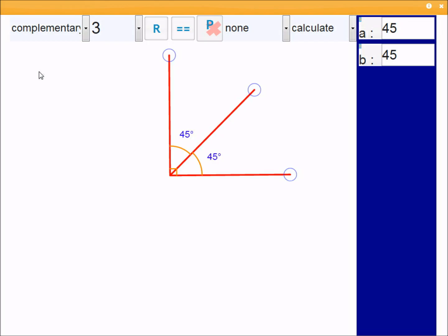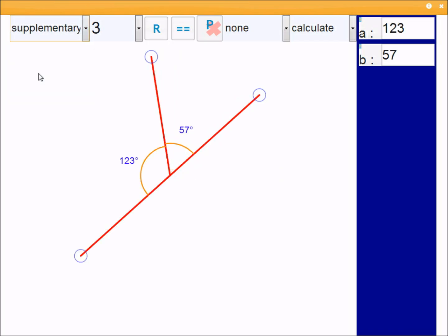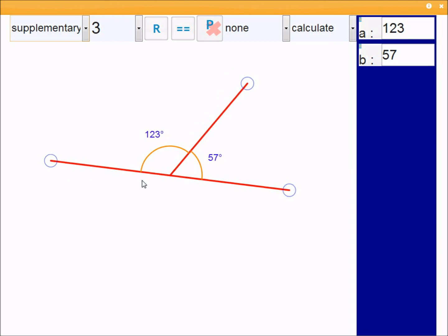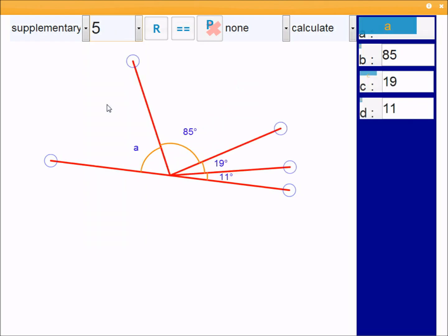Okay, so moving on to supplementary angles. It's very similar to complementary. This time, you've got a straight line with the angles on it. We'll make this a bigger problem. We've got the mode here as calculate again. So you'll see that you've got 11, 19, 85, and you could work this out.